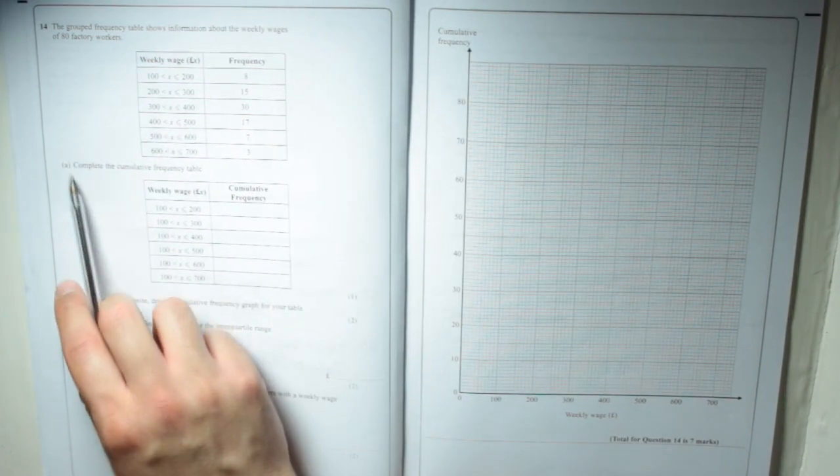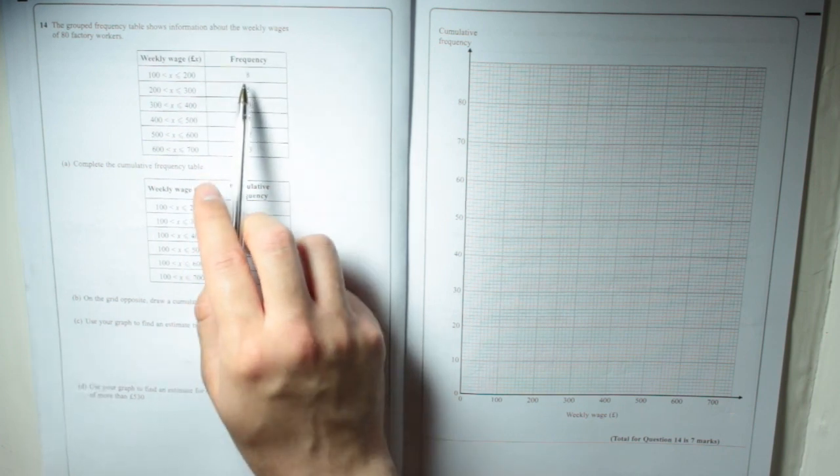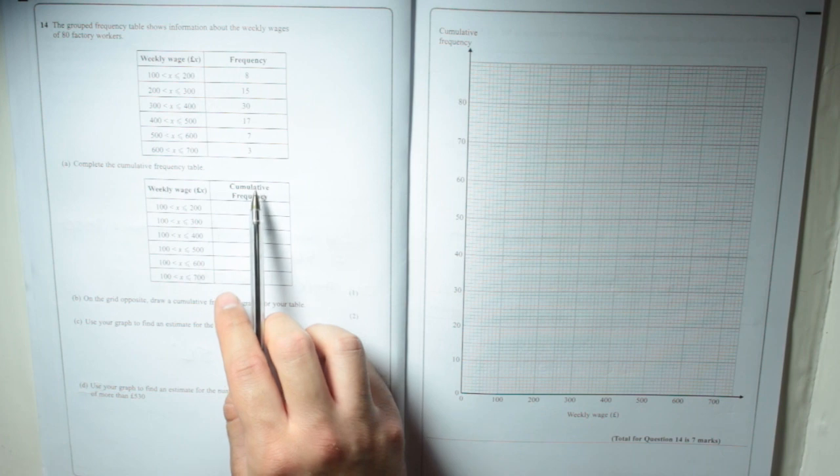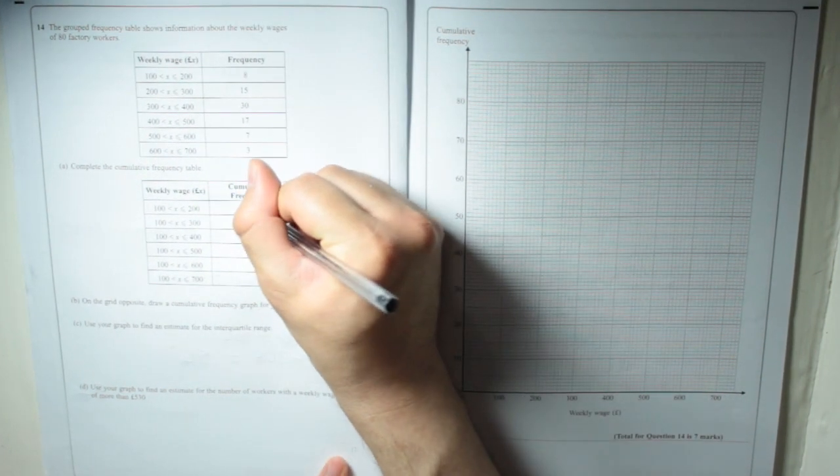So, part A, complete the cumulative frequency table. So that's normal frequency, that's just how many each one has. This one's cumulative frequency which means we add it up as we go along. So the first one's still going to be 8.